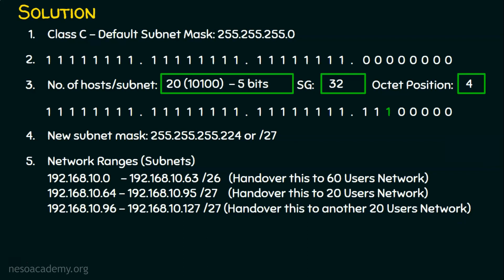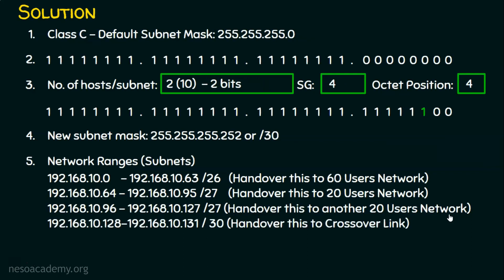We are left with three point-to-point links, each needing only 2 IP addresses. Converting 2 to binary gives 10 — we need a minimum of 2 bits. We reserve 2 zeros from the right and fill remaining positions with ones. The subnet generator is the first one from the right: position 1, 2, 4 — so the subnet generator is 4, in the fourth octet. Starting from 128, adding 4 gives 132, so the fourth subnet is 192.168.10.128 to 192.168.10.131.